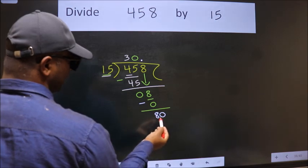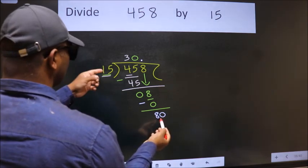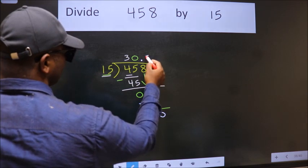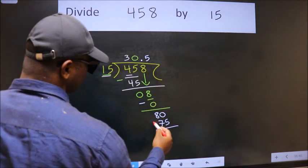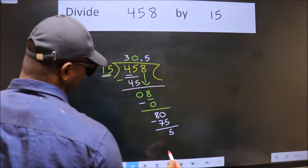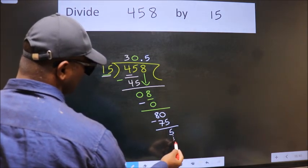So 80. A number close to 80 in the 15 table is 15 fives, 75. Now we subtract. We get 5.